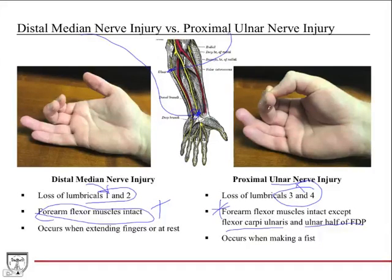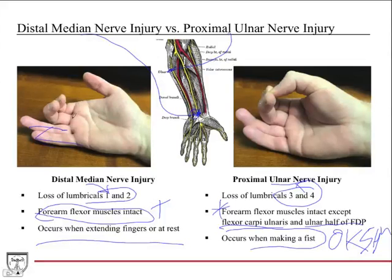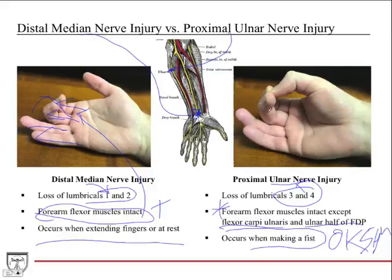The key difference in presentation is when it occurs. In the proximal ulnar nerve injury, the OK sign deformity occurs when trying to make a fist — digits four and five can't flex in and get stuck. In the distal median nerve injury, the median claw occurs when the fingers are trying to extend or are at rest — digits two and three can't extend because they lack lumbrical contribution to extension, and the intact forearm flexors act unopposed pulling those fingers into flexion.